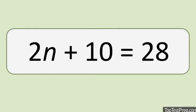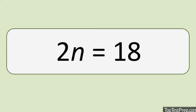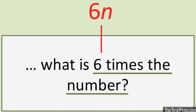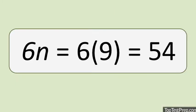Using our first equation, we can solve for n. If 2n plus 10 equals 28, 2n is 18, and n equals 9. But we're not done. We need to find 6n. Plugging in 9 for n, we have 6n equals 6 times 9, which comes out to 54, our answer.